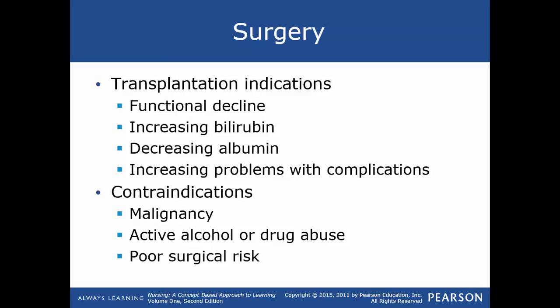Liver transplant is indicated for some patients with irreversible progressive cirrhosis who have functional decline, increased bilirubin levels, decreasing albumin levels, and increasing complications that poorly respond to treatment. Contraindications include malignancy, active alcohol or drug abuse, or poor surgical risk — essentially inability to survive anesthesia.